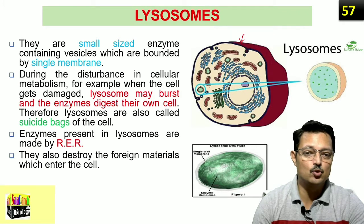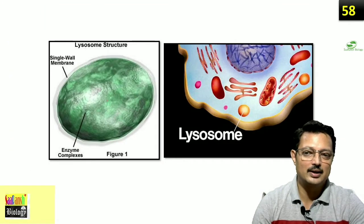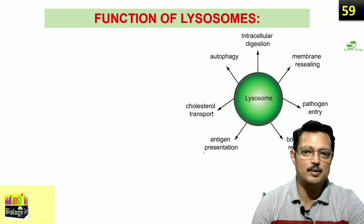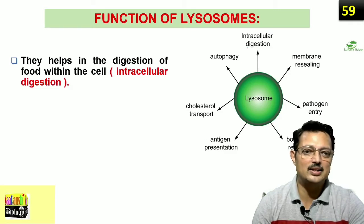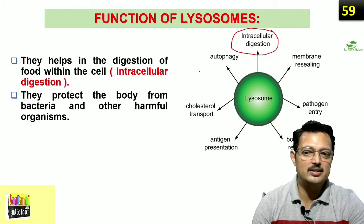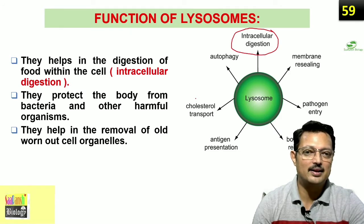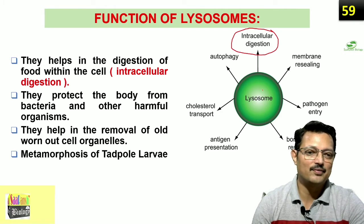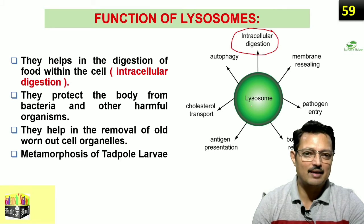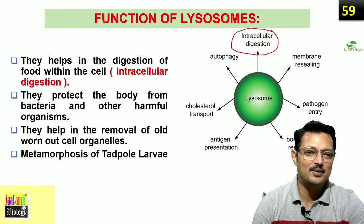Whenever food is taken inside in the form of a food vacuole, it gets fused with the lysosomes and the food is digested. Lysosomes contain very strong enzymes within a single-wall membrane. As far as their functions are concerned, they perform intracellular digestion — whatever comes inside is broken down by lysosomes. They protect the body from bacteria and other harmful organisms and help in removal of old and worn-out cell organelles. They also help in metamorphosis — in the case of tadpole larvae, the tail is digested with the help of lysosomes.